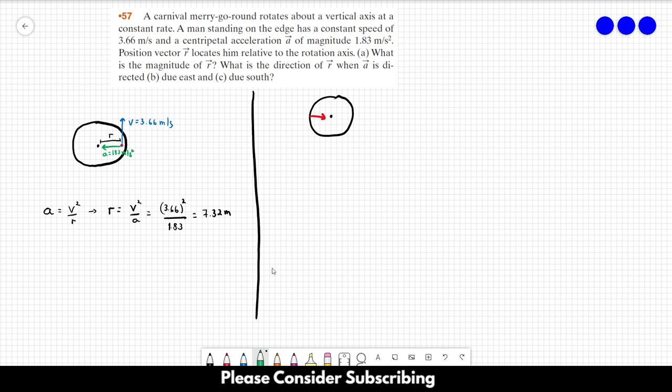So the position of the person is this point over here. So vector R points to the left, points to the west, right? So that's the answer of letter B. It points towards the west. So this is R and the red one is A. Okay, so that's the answer of letter B.